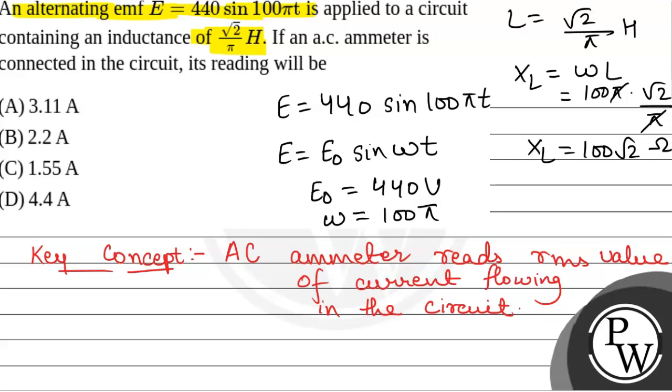We have to find I_RMS. First we will find I₀, the peak value of current, that will be equal to E₀ divided by inductive reactance X_L. That will be equal to 440 by 100√2. So I₀ will be equal to 2.2√2 ampere.